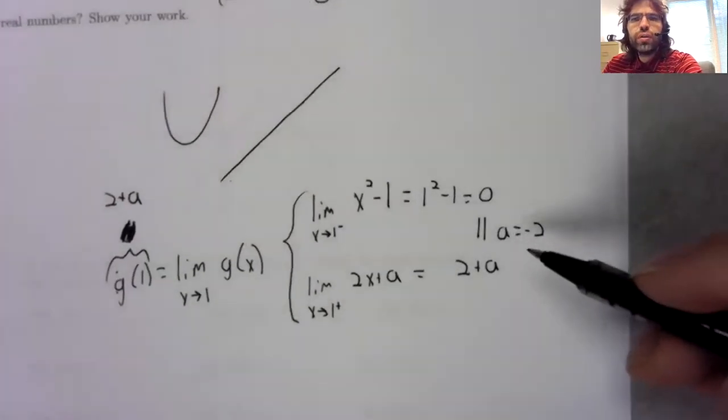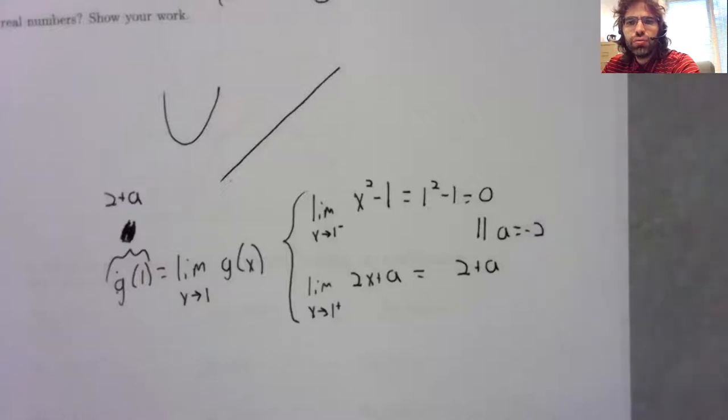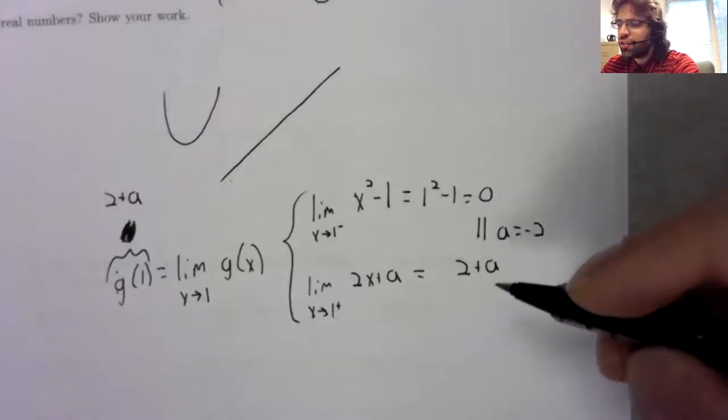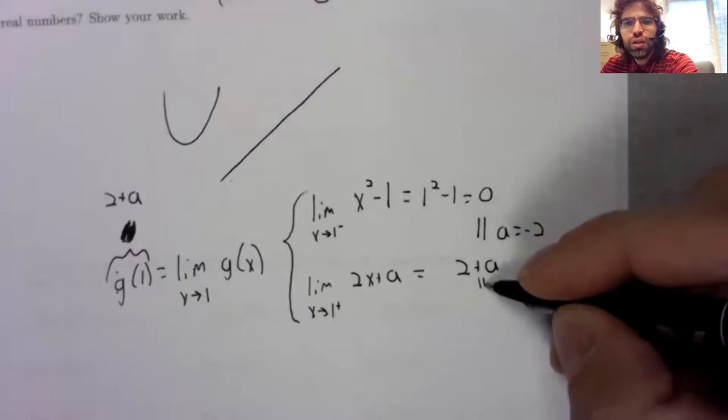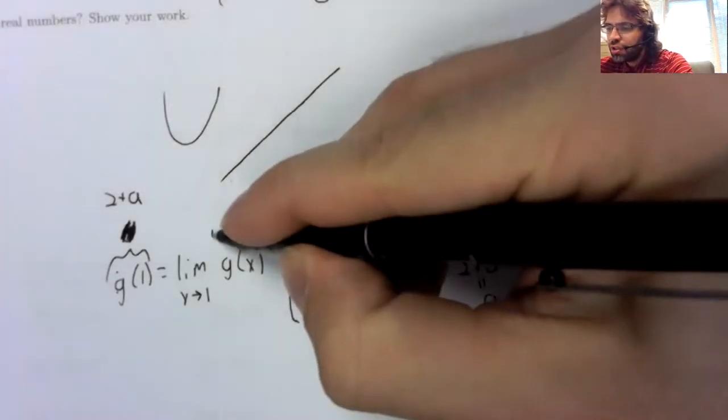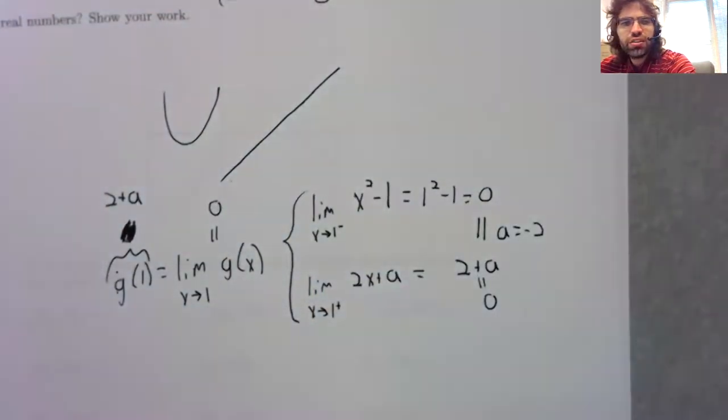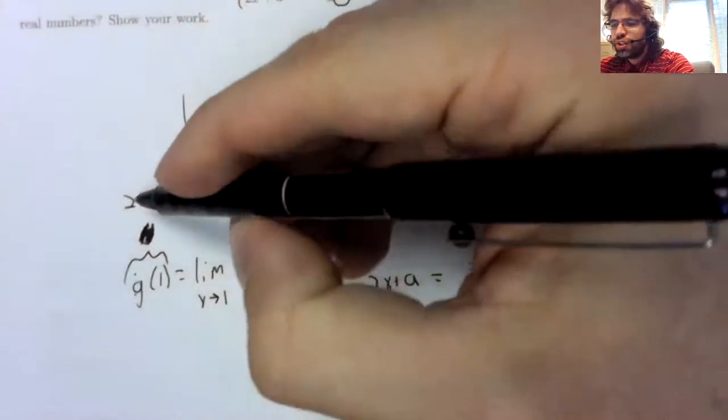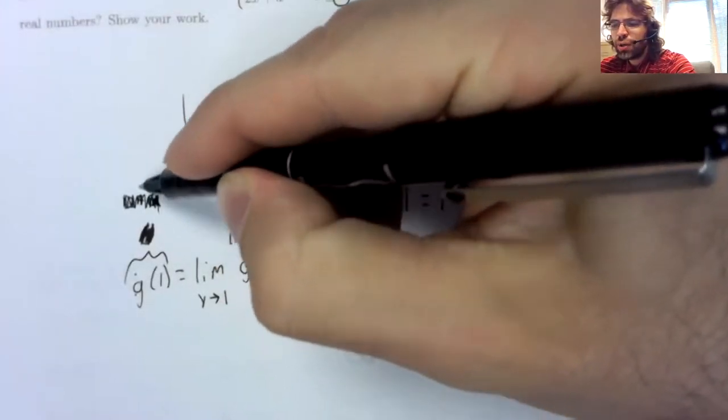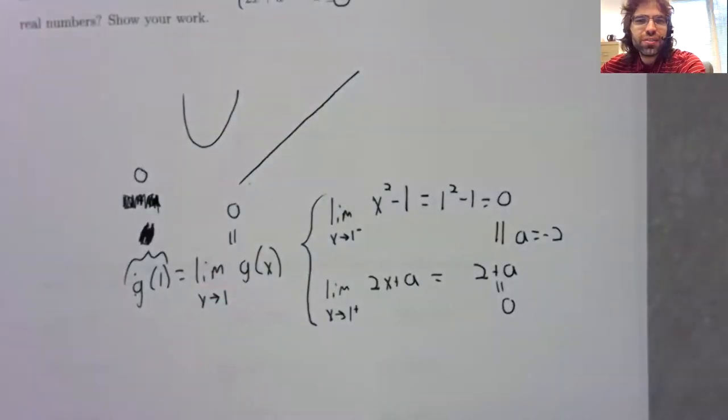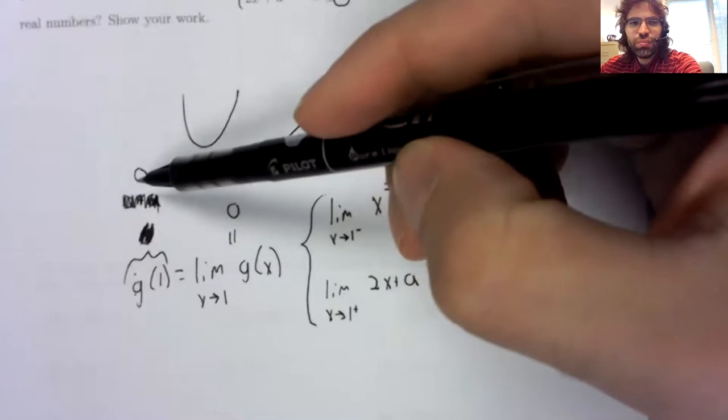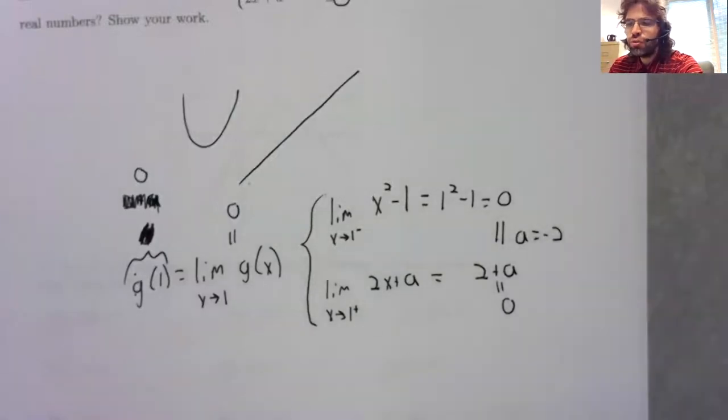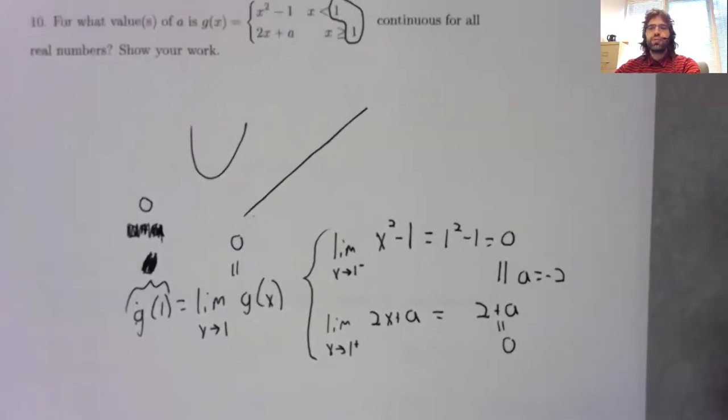So for this limit to exist, a has to be negative two. And then this left-hand limit is zero. This right-hand limit, two plus negative two is also zero. So this two-sided limit exists and is zero. And if a is negative two, then two plus a, I got a little ahead of myself earlier, but now we can say that this is zero. And g of one does equal this limit. So if a is negative two, this is continuous at one.